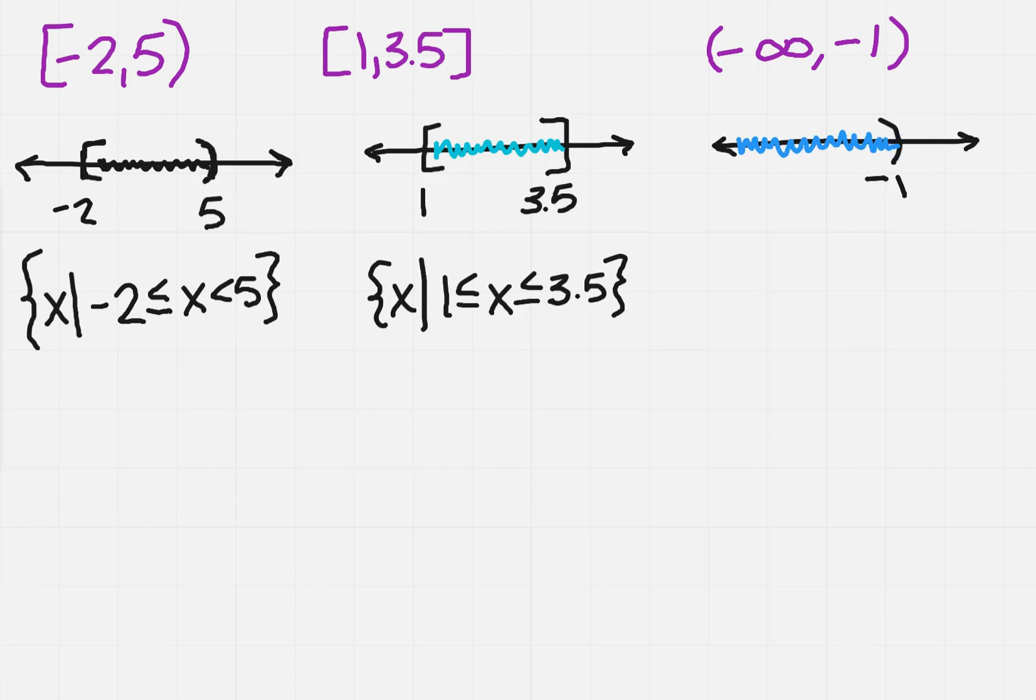Now once I've done that, I need to do the set builder notation. So this time I've got x such that. Now if it's everything that's down to the left of negative 1, that means all the numbers to the left are smaller. So we're just going to say that x is less than negative 1.